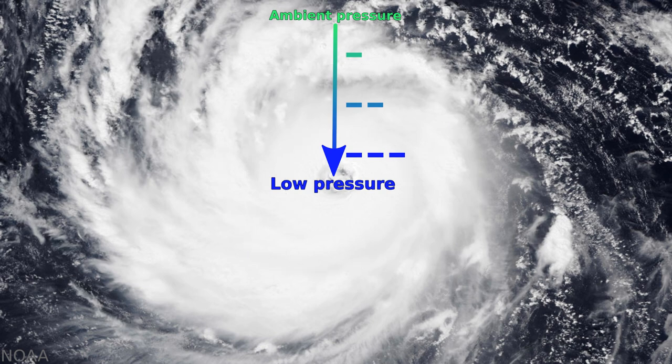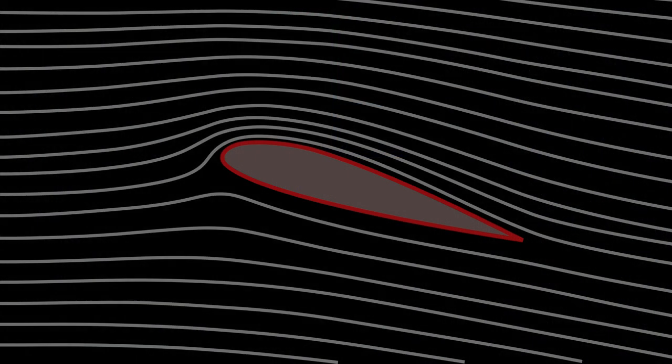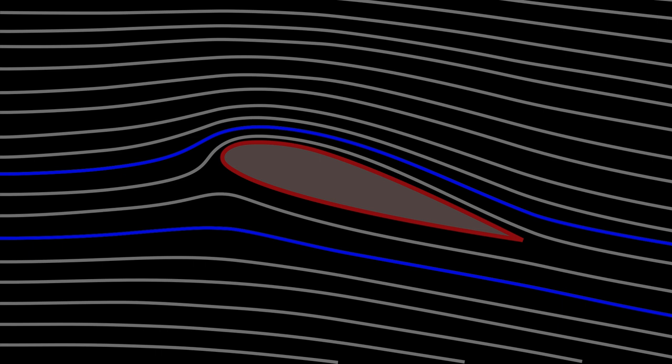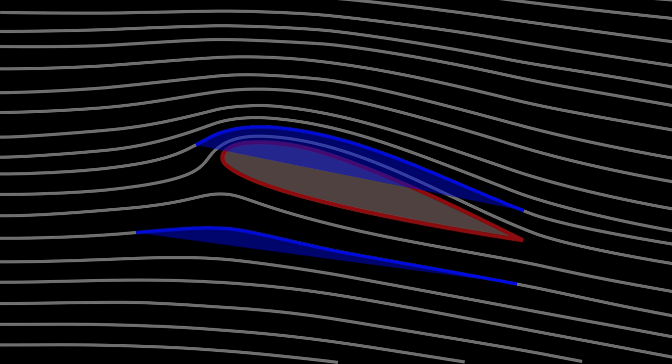To use streamlines to intuitively work out where there are large low or high pressure areas on a wing, consider that both above and below the wing the streamlines are bending downwards and increasingly so closer to the wing.